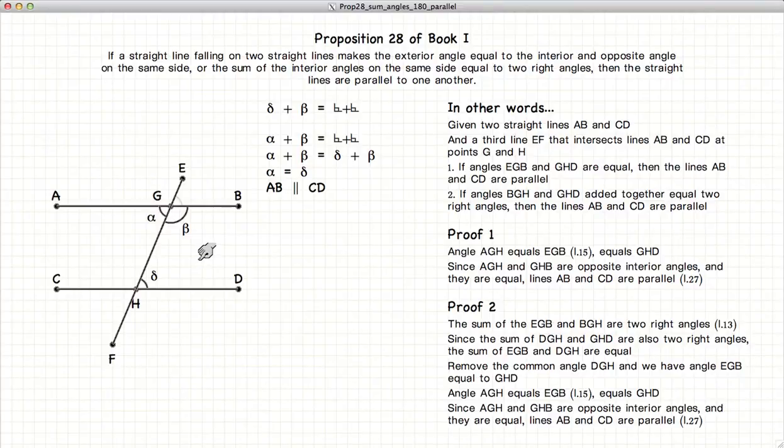So on our second half of the proof, we've demonstrated that if beta plus delta is equal to 180 degrees, AB and CD are parallel.